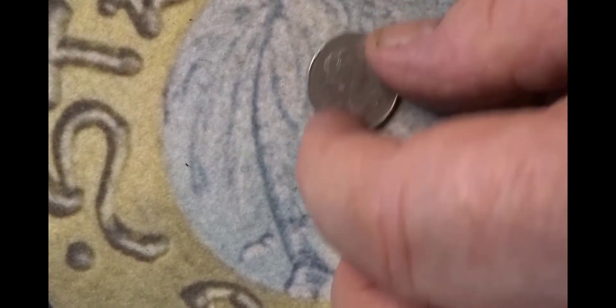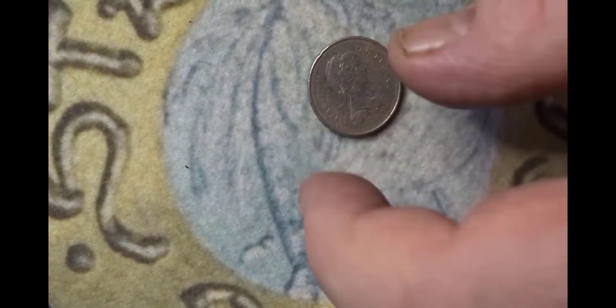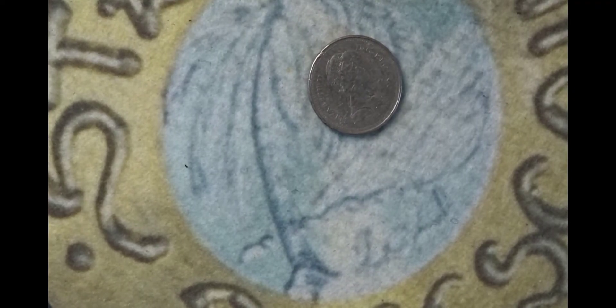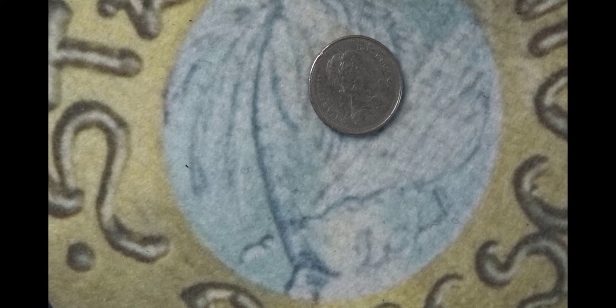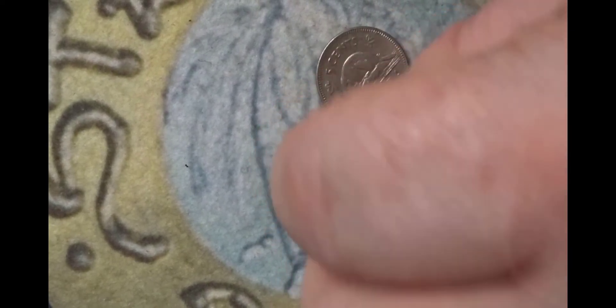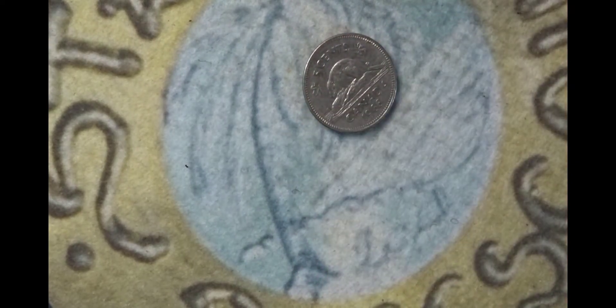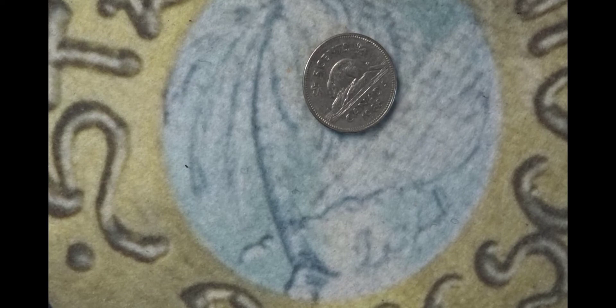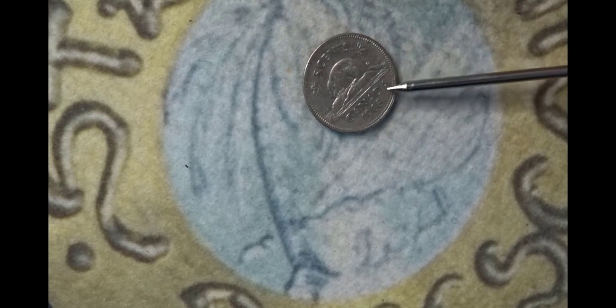Next coin has a queen on it as well. It is a Canadian five cents coin. It's from 1983. On the back is the year, the country name which is Canada, the year 1983, and the animal is a beaver building its hide.